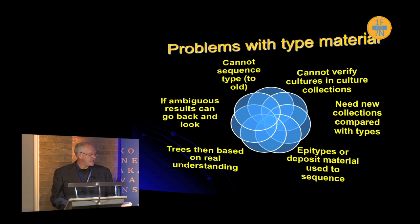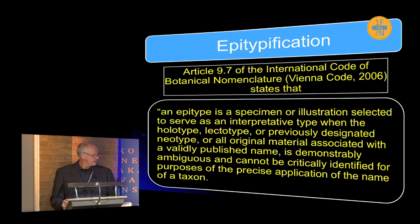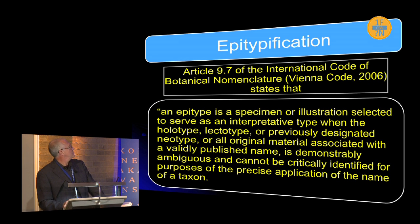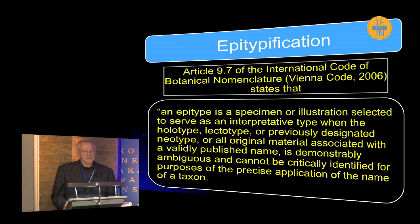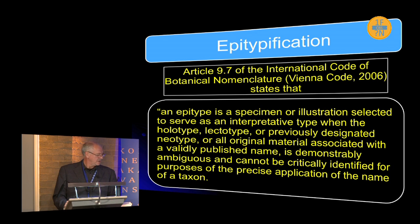So what is an epitype? This is Article 9.7 of the International Code. An epitype is a specimen or illustration selected to serve as an interpretive type when the holotype, lectotype, or previously designated neotype or original material with the validly published name is ambiguous or cannot critically be identified for the purpose of the application of the name of the taxon.